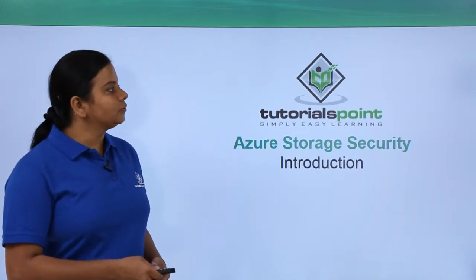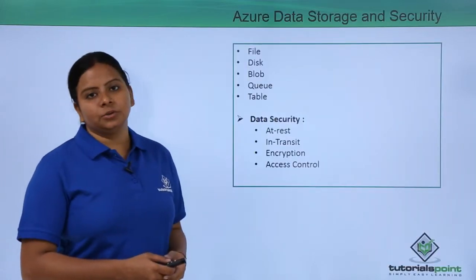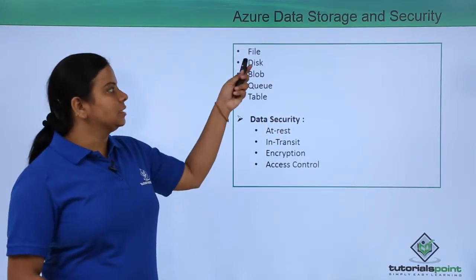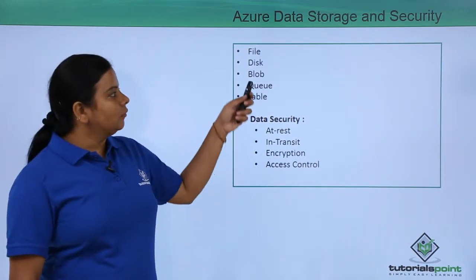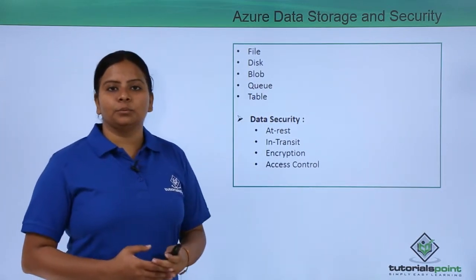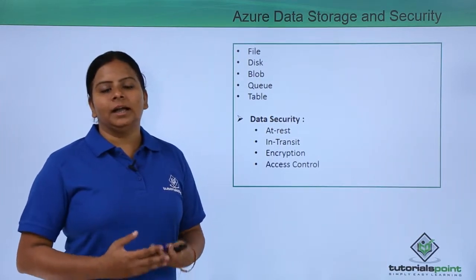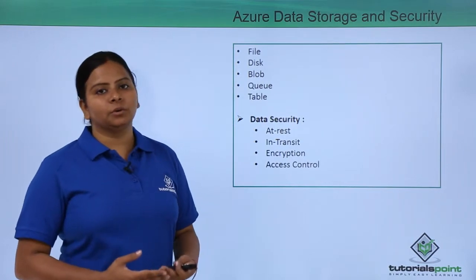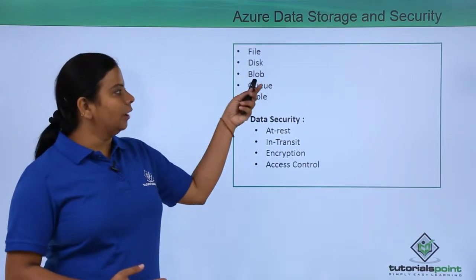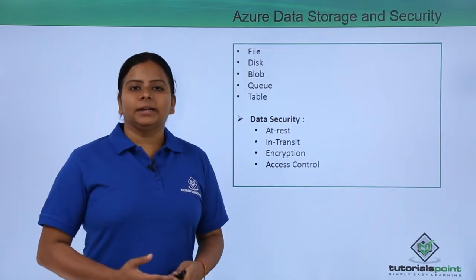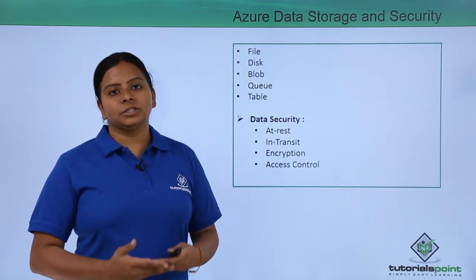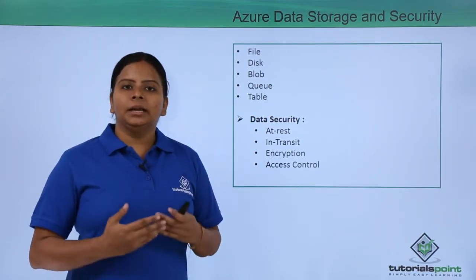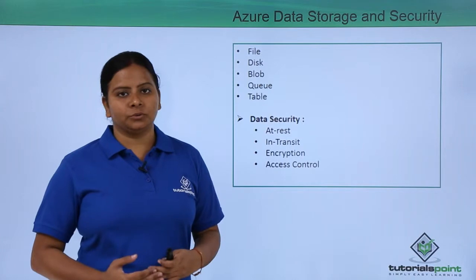We have different kinds of storage in Azure storage. First, we can store data in a file format, called file storage. Same way, we can store data into a disk where generally any kind of file system or raw data can be stored. Same way we have blob storage, where generally we can store a huge amount of data at a low cost.